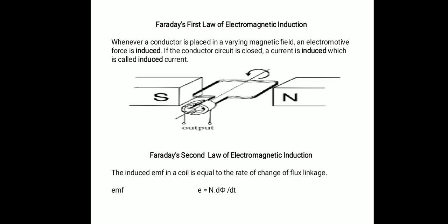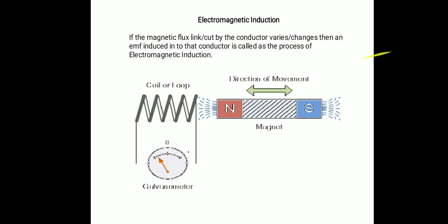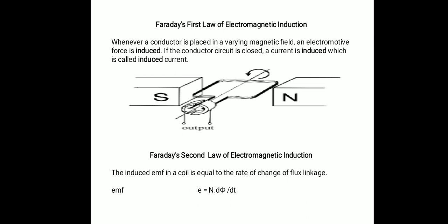Faraday's first law of electromagnetic induction states: whenever a conductor is placed in a varying magnetic field, an electromotive force is induced. You can see in the diagram there are two poles — north pole and south pole — and a rotating coil is placed in between them. As the coil is rotational in nature, if the coil starts rotating, the flux cut by that coil also changes or varies with respect to time. The varying flux is cut by that coil and EMF is induced into that coil. That process is called Faraday's first law.